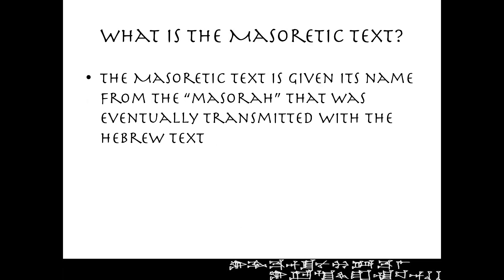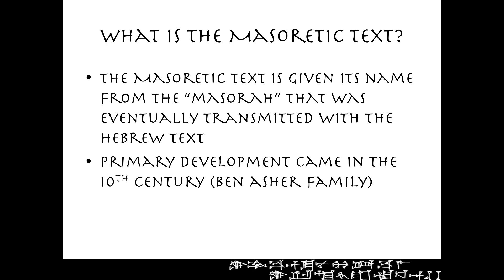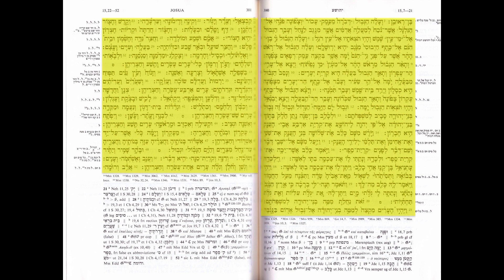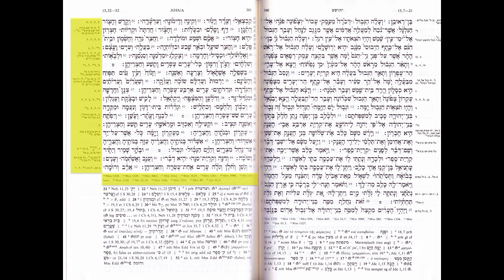So what is the Masoretic Text? The Masoretic Text is given its name from the Masora that was eventually transmitted with the Hebrew text. Its primary development came in the 10th century with the Ben Asher family. This portion represents the main text. Over here and down here, however, we have notes — things that were added, insights, things that were counted, the Qere-Kethiv — all of these things show up in the Masora. This is what was transmitted later with the main text of the Hebrew Bible, and it was firmly developed in the 10th century.